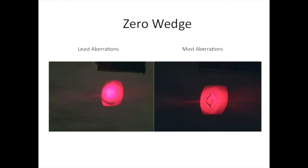With the zero-wedge interferogram, we oriented the lens so that we had the least aberrations with the planar side facing away from the beam, and here we can see we just have the null fringe. When we oriented the lens to have the most aberrations with the planar side facing the beam, we had a lot of spherical aberration.